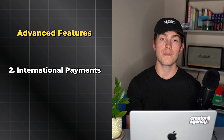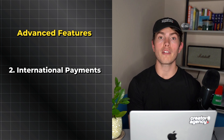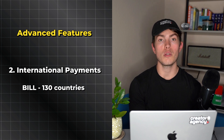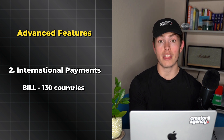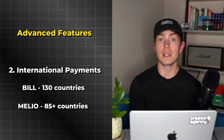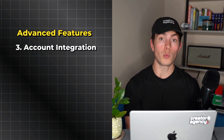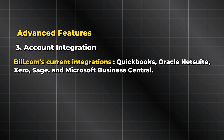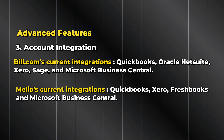Next is international payments. While both Bill.com and Melio offer international payments, Bill.com does come out ahead here because they allow you to send payments to over 130 different countries, while Melio supports over 80 countries. The platforms also differ on which accounting platforms you can integrate with. Bill.com currently integrates with QuickBooks, Oracle, NetSuite, Xero, Sage, and Microsoft Business Central. Melio's integrations are QuickBooks, Xero, FreshBooks, and Microsoft Business Central.